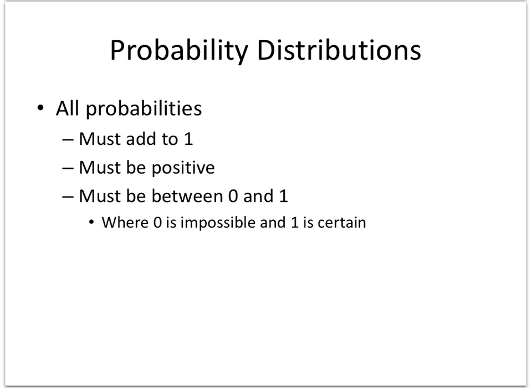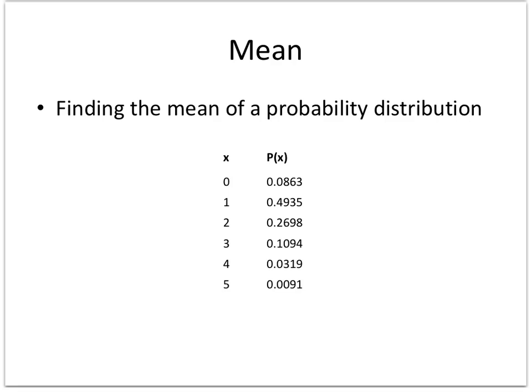A probability distribution, all probabilities must add to 1. The probabilities must be positive and they must be between 0 and 1, but they can actually equal 0 and 1, where 0 means impossible and 1 is certain.